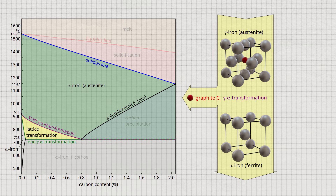Such graphite precipitation is not only favored by relatively slow cooling rates, but can also be specifically enhanced by the addition of silicon. The precipitation of carbon in the form of graphite is also referred to as a stable system, since the carbon in this form cannot decompose any further and is therefore stable in the thermodynamic sense. A microstructure formed according to the stable system thus basically consists of iron and graphite. Cast iron has a relatively high carbon content of over 2% and is thus a typical representative of the stable system.